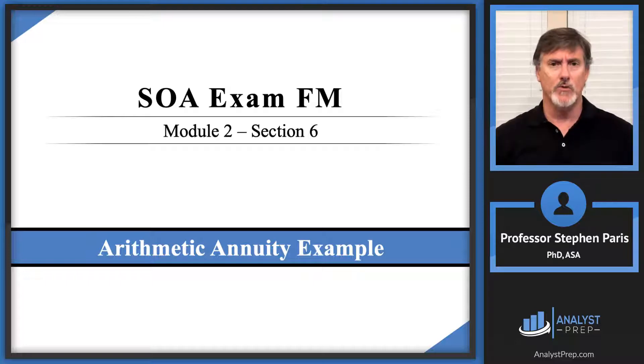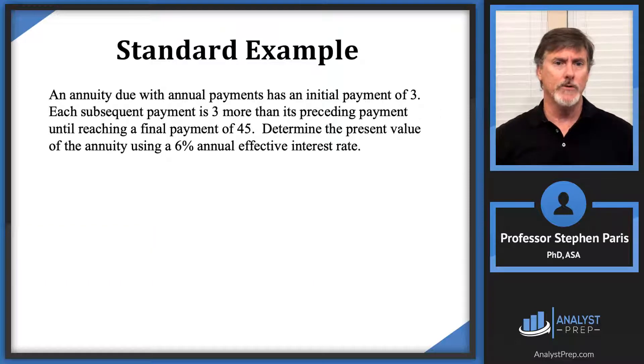Okay, so the problem: We have an annuity due with annual payments that has an initial payment of 3. Each subsequent payment is 3 more than its preceding payment until reaching a final payment of 45, and we want to determine the present value of this annuity using a 6% annual effective interest rate.